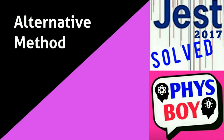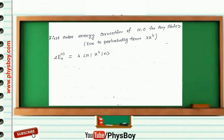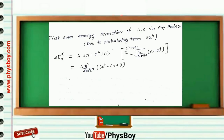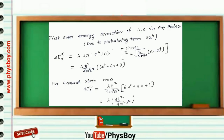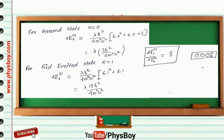Now the alternative method. You just need to remember a general formula for the harmonic oscillator. The first-order energy correction of the harmonic oscillator for any state n due to the perturbation term lambda x to the power 4 is given by a general formula. If you put the value of x in this equation, you get the formula: lambda h-bar squared by 4 m squared omega squared, times (6n squared plus 6n plus 3). For the ground state put n equals 0, and for the first excited state put n equals 1. The ratio of the two gives 5.